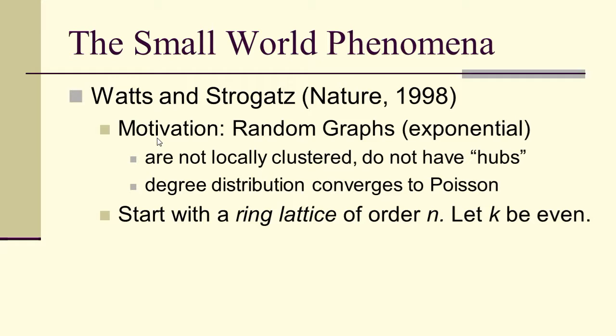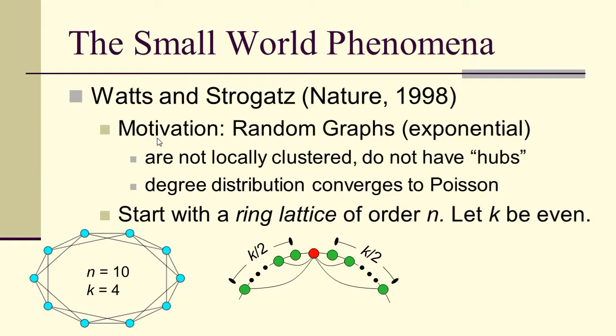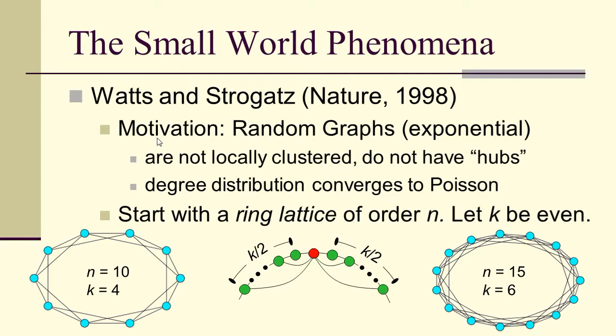Now Watts and Strogatz, in an article in Nature in 1998, created a model of small world graphs. Their motivation was to look first at random graphs and notice they are exponential, they are not locally clustered, they do not tend to have hubs, and their degree distribution converges to a Poisson distribution. So they started with a ring lattice of order n, and they said let k be even. What they did was they connected each vertex to its k over 2 neighbors to the right and k over 2 neighbors to the left. Here we have an example for n equals 10 and k equals 4, and here's n equals 15 and k equals 6. So these are k regular graphs, every vertex has degree k.